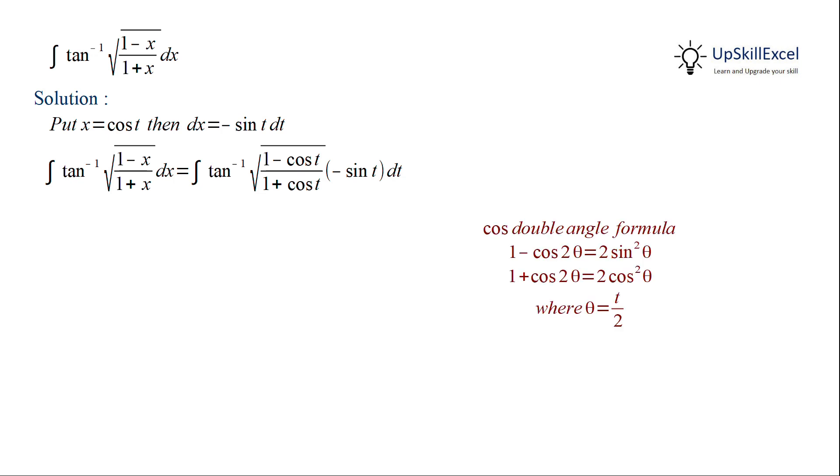So, we can apply cos double angle formula and write 1 minus cos t as 2 sin square t over 2 and write 1 plus cos t as 2 cos square t over 2. The 2s get cancelled and sin over cos can be written as tan.